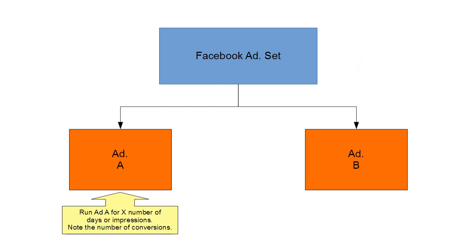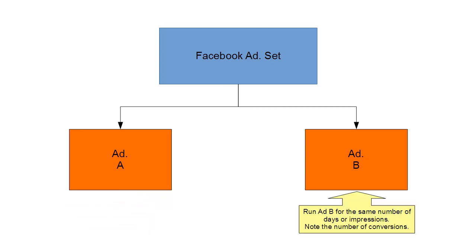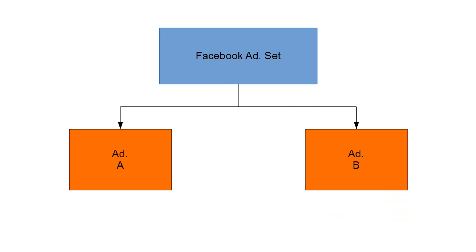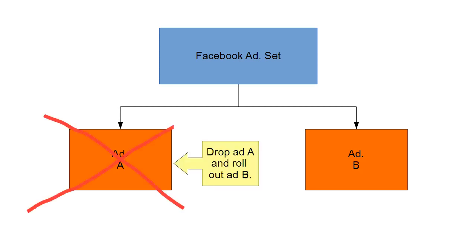So let's say you're going to have the two ads, and you run ad A for X number of days or impressions. You then note the number of conversions. You then run ad B for the same number of days or impressions, and again you note the number of conversions. Now let's say for the sake of argument that when you go through all the stats you find that ad B outperforms ad A. What you simply do is drop ad A and roll out ad B to everybody that you want to target with the ad.